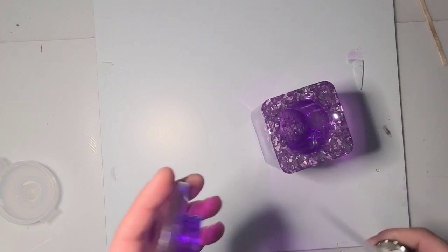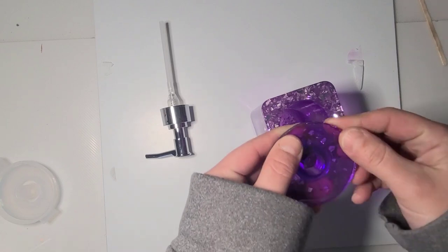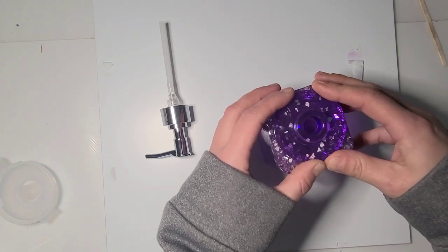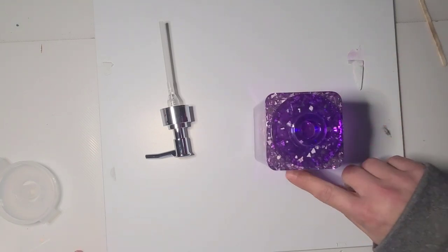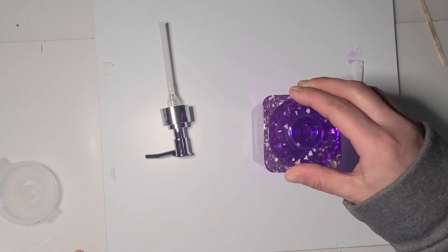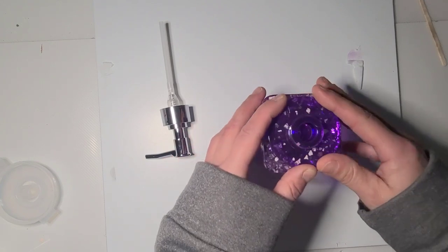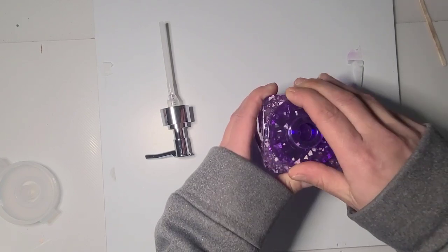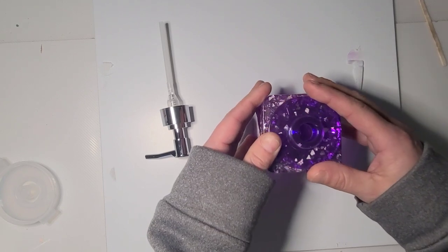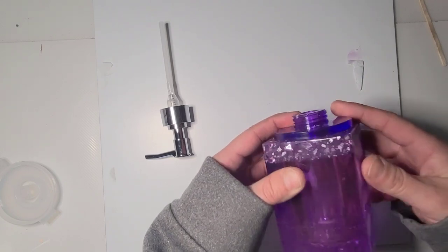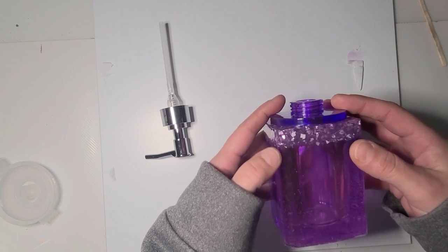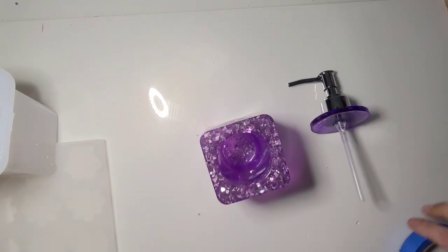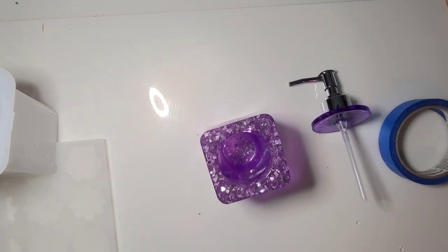And when I get some resin mixed up here in a little bit, I'm going to use resin to attach this, and I'll just let it cure in place. I think that'll give me my best seal. I don't really want to use glue, I think I want to stick to resin. So I will come back when I am ready to do that in a little bit here. Okay, so I am ready to get the top tacked down to this and be done with this one.